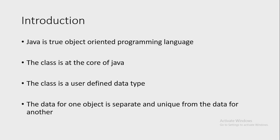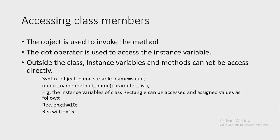Each object of the class contains its own copy of these variables, so the data for one object is separate and unique from the data for another. The code is contained within methods. Collectively, the methods and variables defined within a class are called the members of the class. Instance variables are acted upon and accessed by the methods, which determine how a class's data can be used.